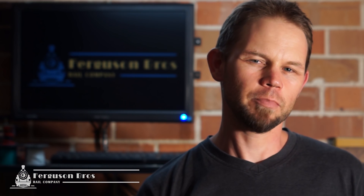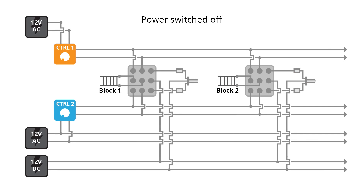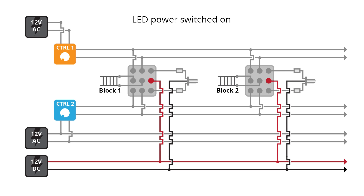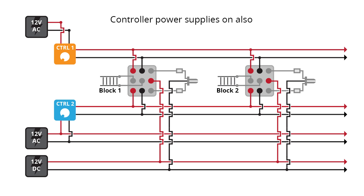Let's have a look at the circuit diagram to help visualize this. This illustration shows two AC controllers, one DC controller, and two switches. Starting by turning on the DC transformer, and now turning on the two AC transformers. You can see there is current flowing into the switches, but they're still in the center off position so nothing is getting through to the LED lights or the track. Now the first switch is set to controller one, allowing current to flow from controller one into block one.